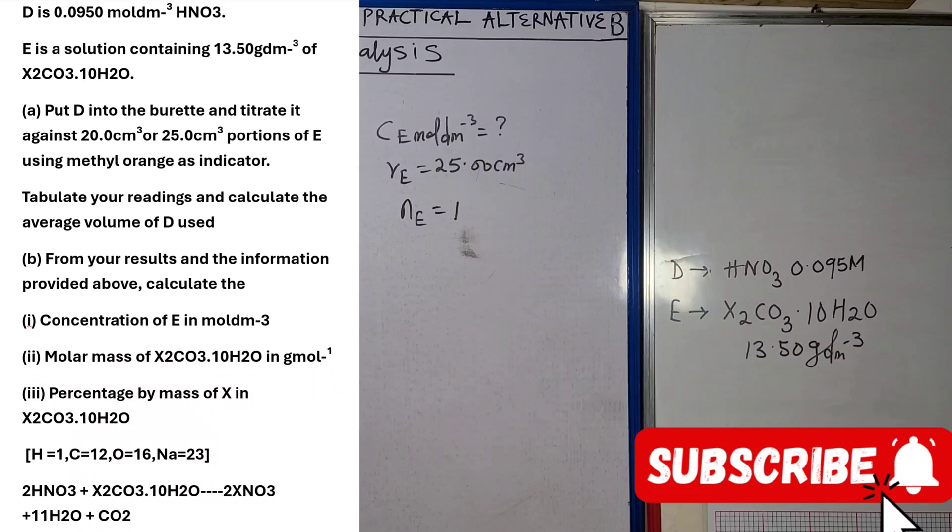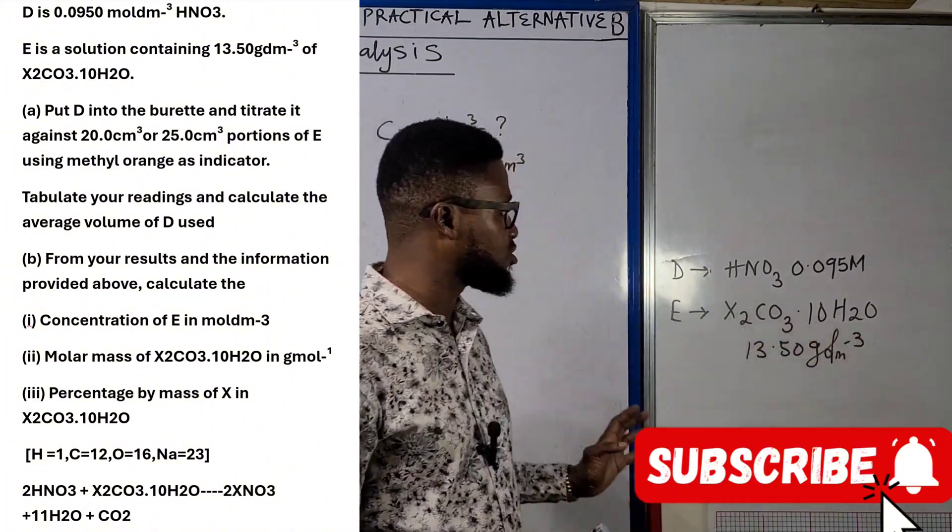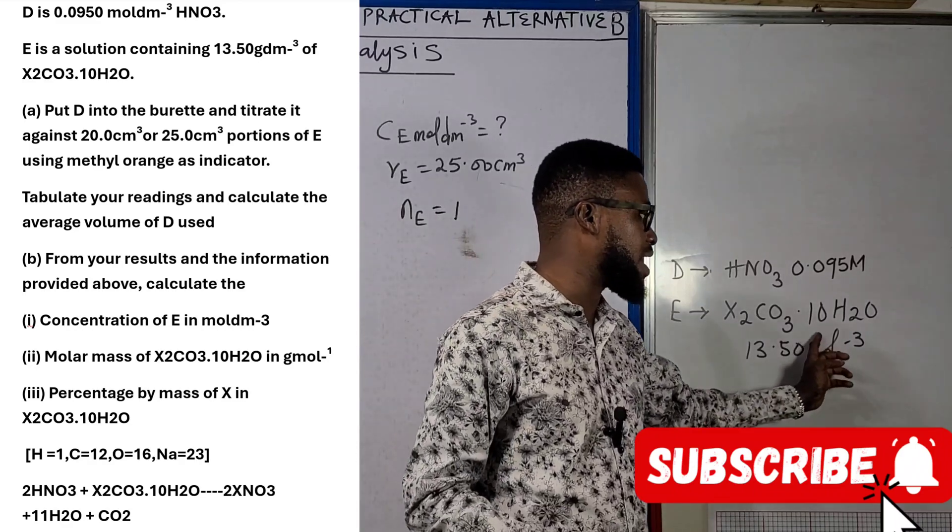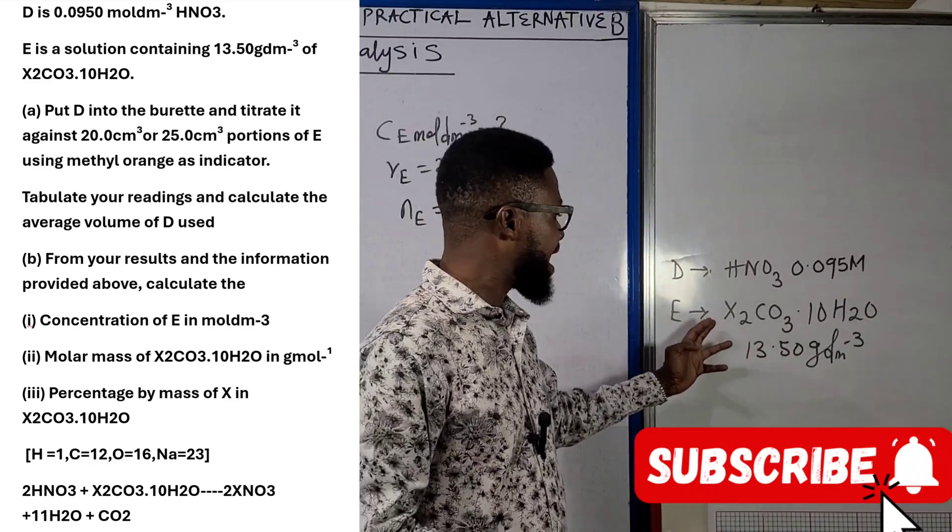E here is a solution containing 13.50 grams per dm³, that's mass concentration there, but this time around we're talking Na₂CO₃·10H₂O, that's decahydrate.